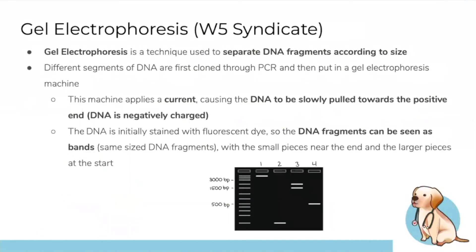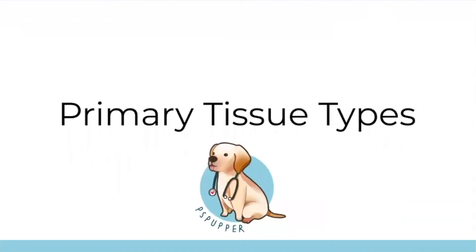Gel electrophoresis — not particularly high yield, just know the basics. You put DNA into little wells, run an electric current through it, and because DNA is negatively charged, it's pulled toward the positive end. This separates DNA into bands depending on size. Smaller fragments travel further; larger ones stay closer to the start.